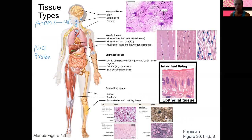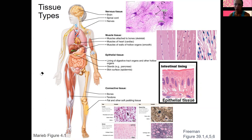Tissues are groups of cells along with often extracellular matrix — extracellular material — that work to do something, so they have functions associated with them. These are the four main tissue types. I'm going to briefly talk about the functions of all four, and then we'll be focusing on epithelial and connective. They are groups of similar cells — not always one cell type, but similar cells — along with their products that function as a unit.